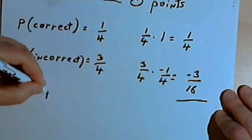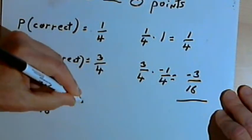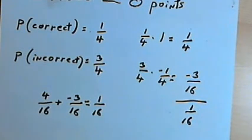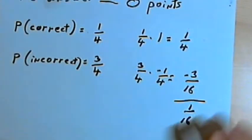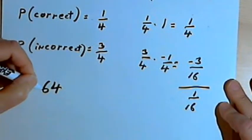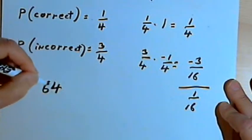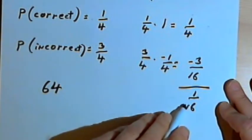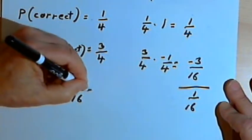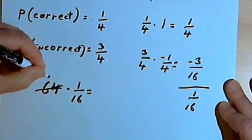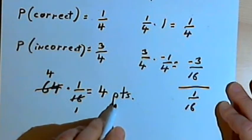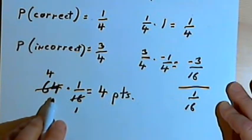Now we add one-quarter and negative three-sixteenths. One-quarter is the same as four-sixteenths, so four-sixteenths plus negative three-sixteenths equals one-sixteenth. That's the expected value. For example, if there were sixty-four questions where you could rule out one answer and guess from four remaining choices, your expected value of one-sixteenth of a point per question means you would gain four points total by guessing on those sixty-four questions.